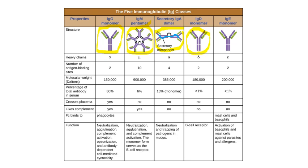IgD is a monomer and we don't actually know too much about its function — it's listed as a B cell receptor, but its specific role is unclear. IgE is a monomer and is incredibly important for immune responses to parasitic infections — it's also a major trigger for allergies, and if you're ever infested with parasitic worms, IgE is going to be important in fighting that kind of infection.